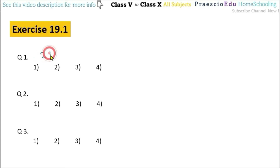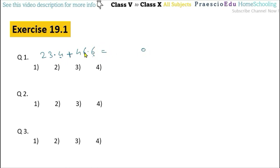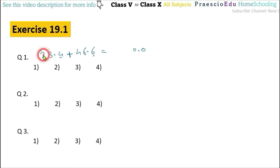Now exercise 19.1, question number 1: 23.4 plus 46.6. We will try to make the additions in a horizontal manner, meaning at respective places. This is the 10ths place — 4 plus 6 is 10, so 0 here and carry 1. The decimal point we will maintain. Then 1 carry plus 3 plus 6 is 10, carry 1. Then 1 plus 2 plus 4 is 7. So the answer is 70.0, given in option number 1.